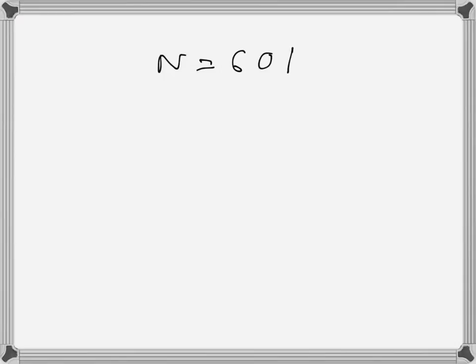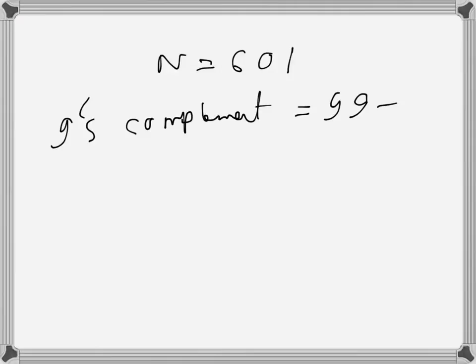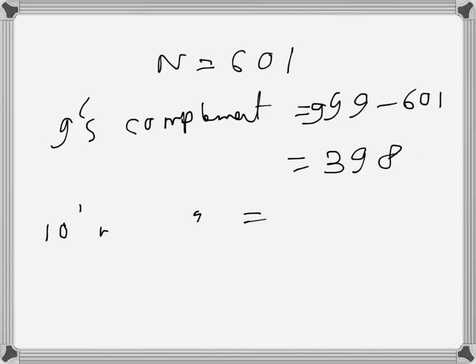Let's try another number: N is 601, which has three digits. The highest possible number with three digits is 999. So the 9's complement is 999 minus 601, which equals 398. The 10's complement is then 398 plus 1, which equals 399.